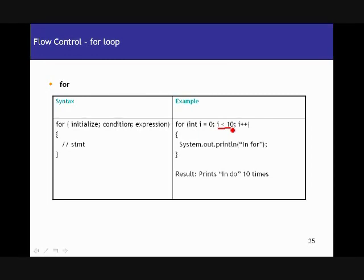Most of the time you can use either a while loop or a for loop. The advantage of the for loop is that you can put everything — initialization, condition, and expression — in one line, whereas with while you have to keep track of things at multiple places. That's it about flow control.